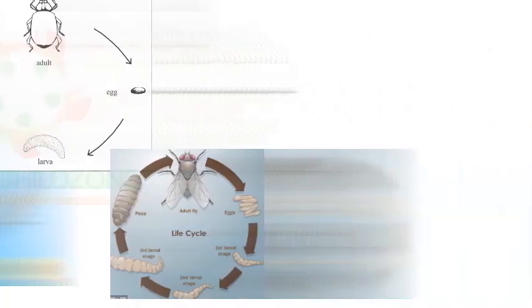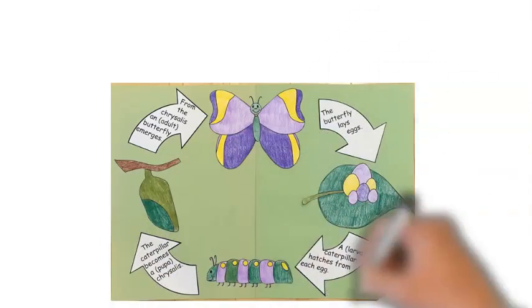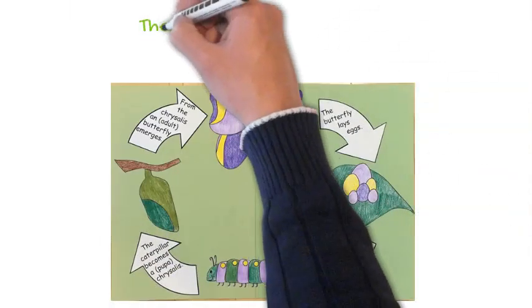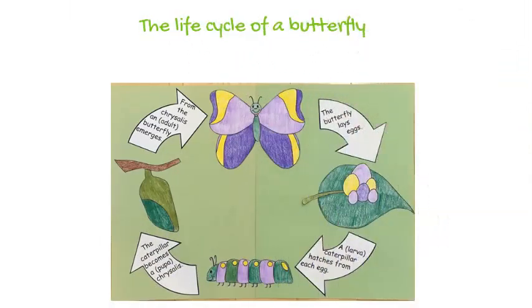The life cycle of a butterfly goes from when the butterfly lays the egg, to a caterpillar — which is the larva — hatching from each egg, then the caterpillar later becomes a pupa, which then emerges as an adult after some time.